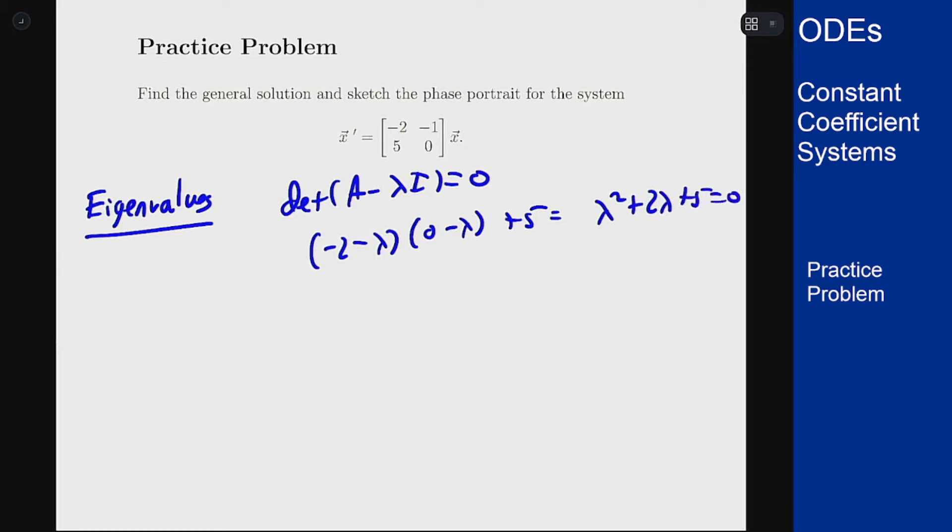That's not going to factor and the quadratic formula will tell us then that we should have lambda equaling negative two plus or minus the square root of four minus four times five is twenty over two negative two plus or minus root minus sixteen over two which is minus one plus or minus two i.